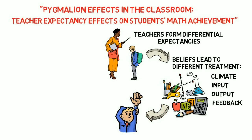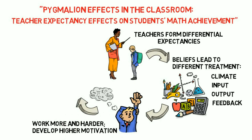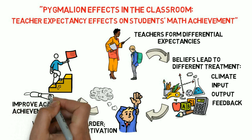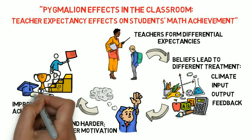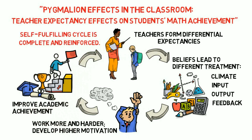Students, in turn, recognize the teacher's high expectancies and react to them. They may work more and harder, and develop higher motivation and interest in schoolwork. This more engaged student behavior will, in the long run, improve their academic achievement, and those changes may also affect students' self-concept and motivation. The teacher then recognizes the positive changes in the student's behavior, feels supported in his or her former expectancies, and the self-fulfilling cycle is complete and reinforced.